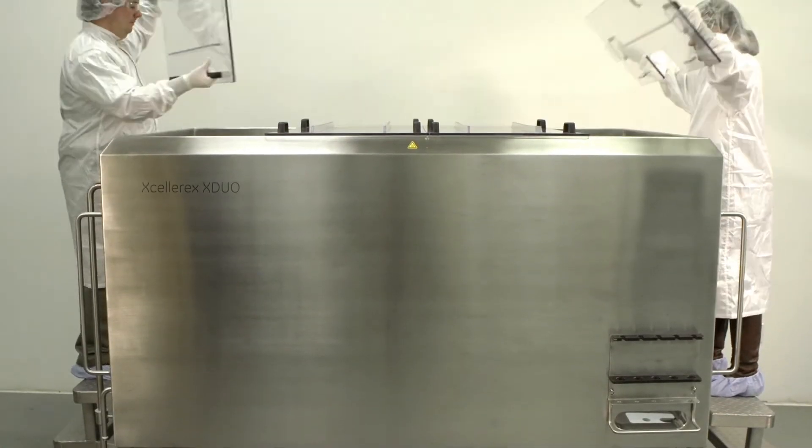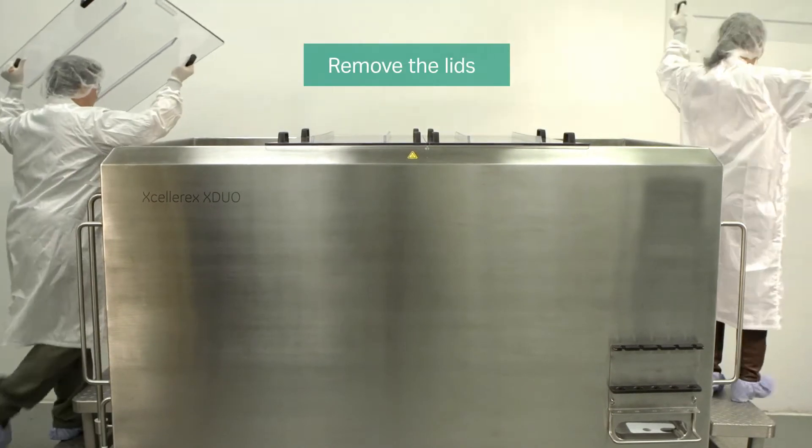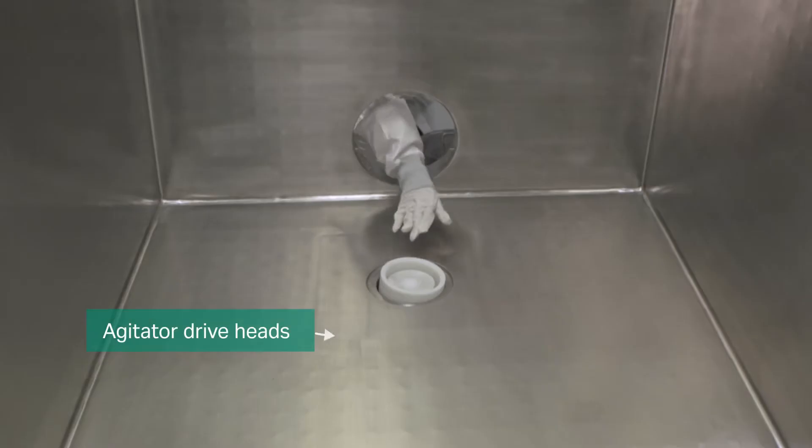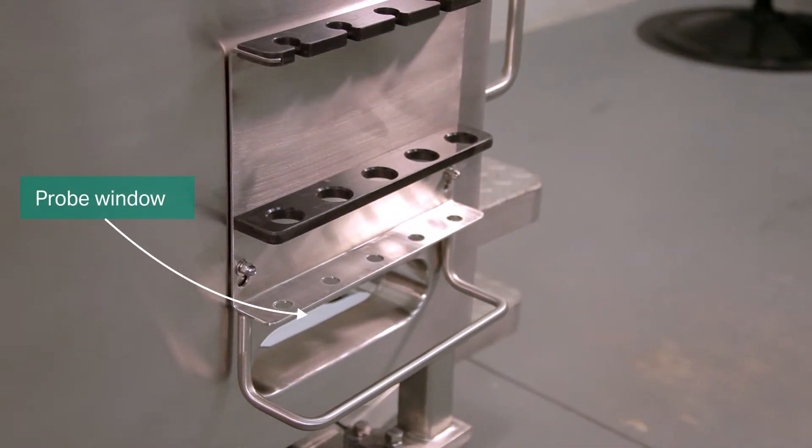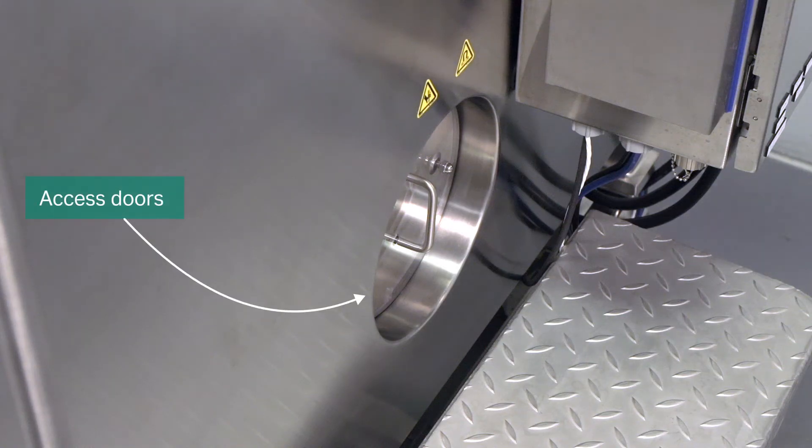Before installation of the disposable bag, remove the lids from the top of the vessel and locate the agitator drive heads, drain opening, probe window, and access doors on both sides of the vessel.